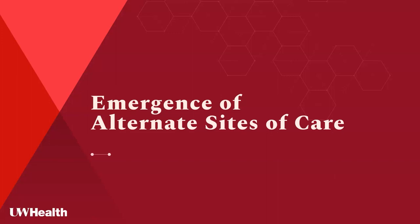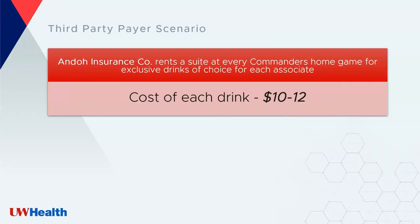This leads me into the first segment: the emergence of alternate sites of care. I saw a couple of comments in the chat — travel time to the hospital is a con, definitely noted. Lack of access to transportation is also a con for sure. So we'll dive into all of that. When we think about the emergence of alternate sites of care, patients were initially treated inpatient and are now potentially being treated in an outpatient setting.